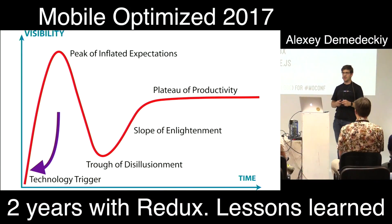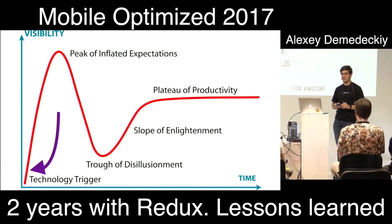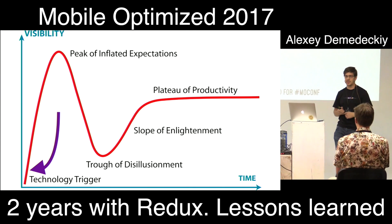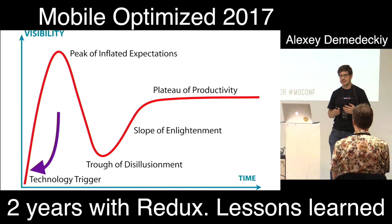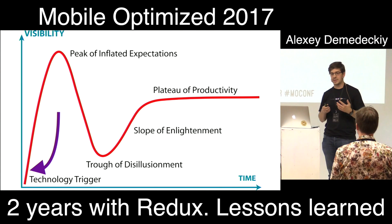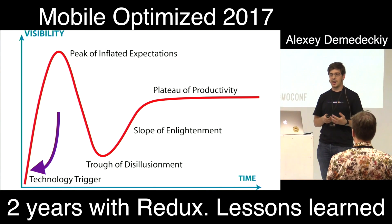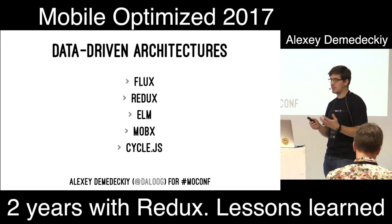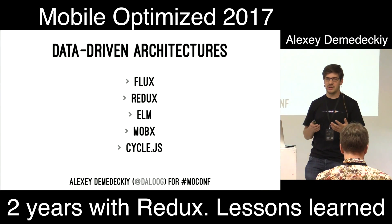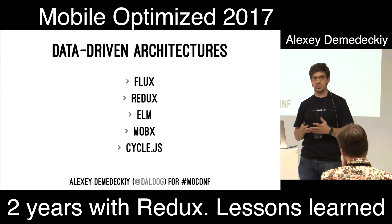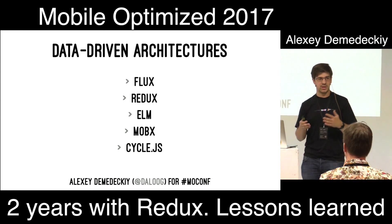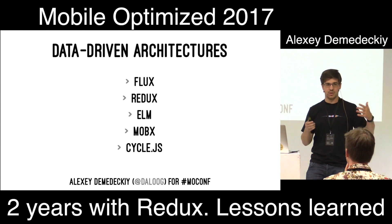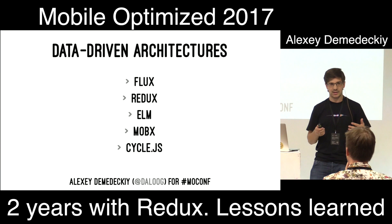Two years ago I saw the rise of unidirectional data-driven architectures like Redux, MobX, Elm, and CycleJS. These ideas became extremely popular with the rise of the single-page application pattern on the web platform, because single-page applications are more like native applications where we need to handle state during the session. Classic web applications don't require such complex operations, routing inside, and so on.